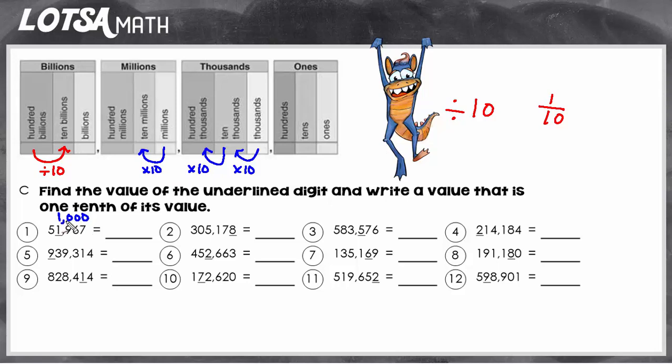So if we have this thousand, we could divide by ten, or we could just move the digit one into the place that's ten times smaller. So ten times smaller than a thousand is a hundred. So if we move this one to the hundreds place, it would be ten times smaller. So when we write our answer, we just need to make sure that the one is now in the hundreds place.